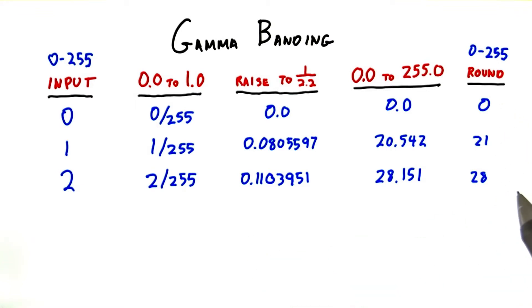On the low end, some levels are never used. On the high end, you can have the opposite, that a number of different input levels mapped to a single output level.